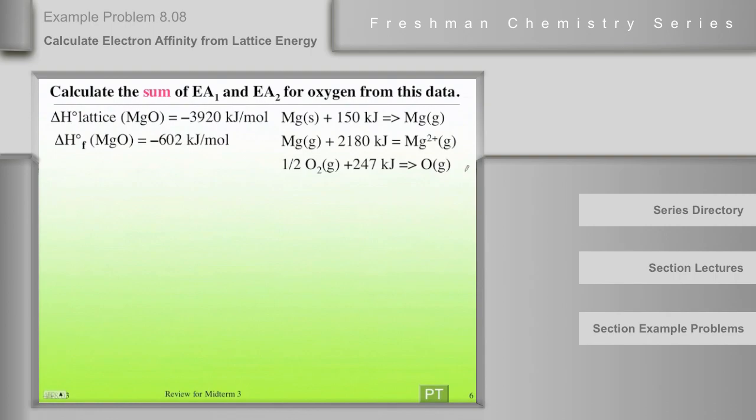The homework exercise was the second most requested problem. Calculate the sum of electron affinity 1 and electron affinity 2 for oxygen from this data.